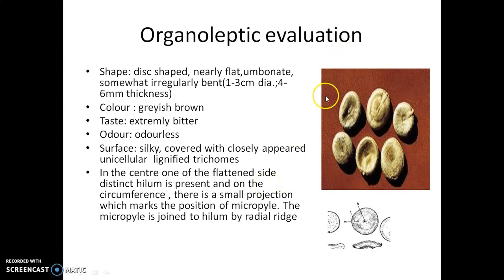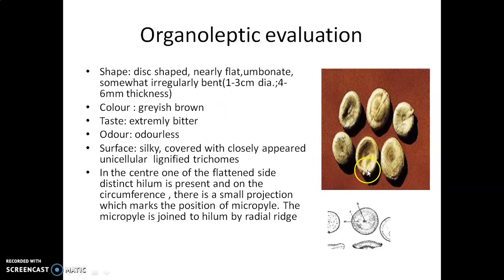Let's see the organoleptic characters of this poisonous seed. The shape is disc-shaped, flat, umbonate, and somewhat irregularly bent — as you can see here. The diameter is 1 to 3 cm and thickness is 4 to 6 mm. Color is grayish brown. Taste is extremely bitter. It is odorless. The surface is covered with closely appressed unicellular lignified trichomes, which is why the surface appears velvety or silky.